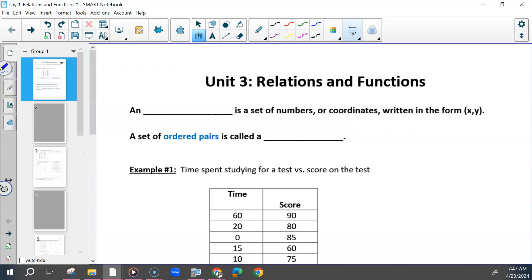So, some vocab. An ordered pair is a set of numbers or coordinates written in the form XY.